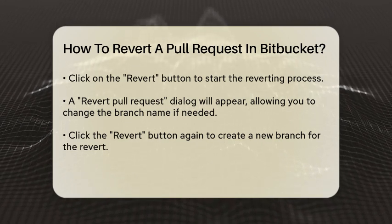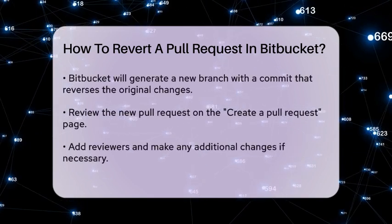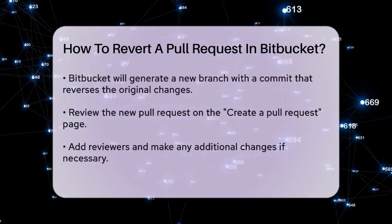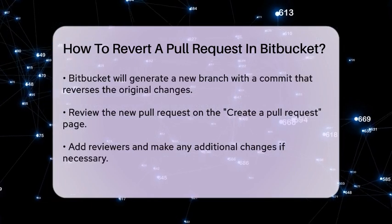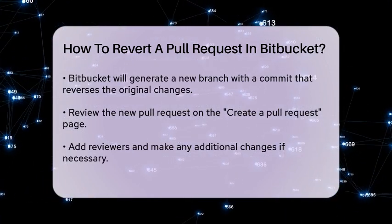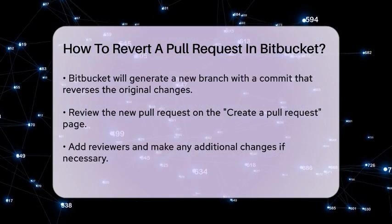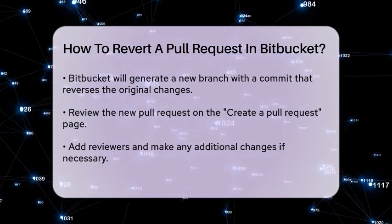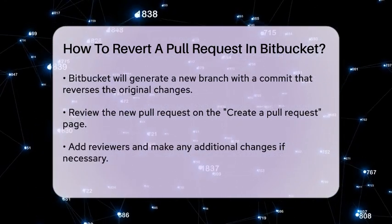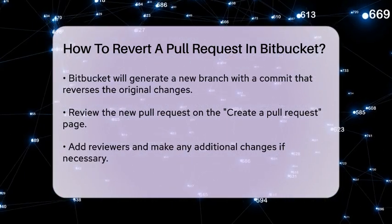The next step is to review and manage this new pull request. The Create a Pull Request page will open with the revert branch as the source. Here, you can add reviewers, make any additional changes if necessary, and then click Create to submit the new pull request.